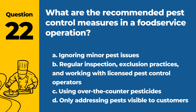Question 22. What are the recommended pest control measures in a food service operation? A. Ignoring minor pest issues. B. Regular inspection, exclusion practices, and working with licensed pest control operators. C. Using over-the-counter pesticides. D. Only addressing pests visible to customers. Answer: B. These measures are crucial for effective pest control in a food service environment.